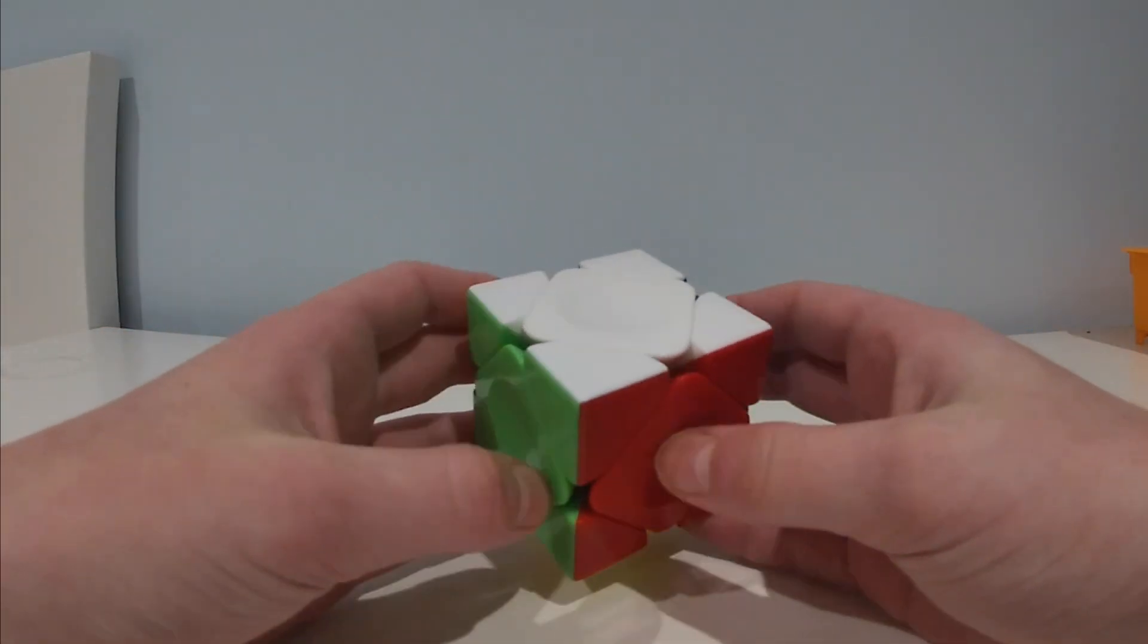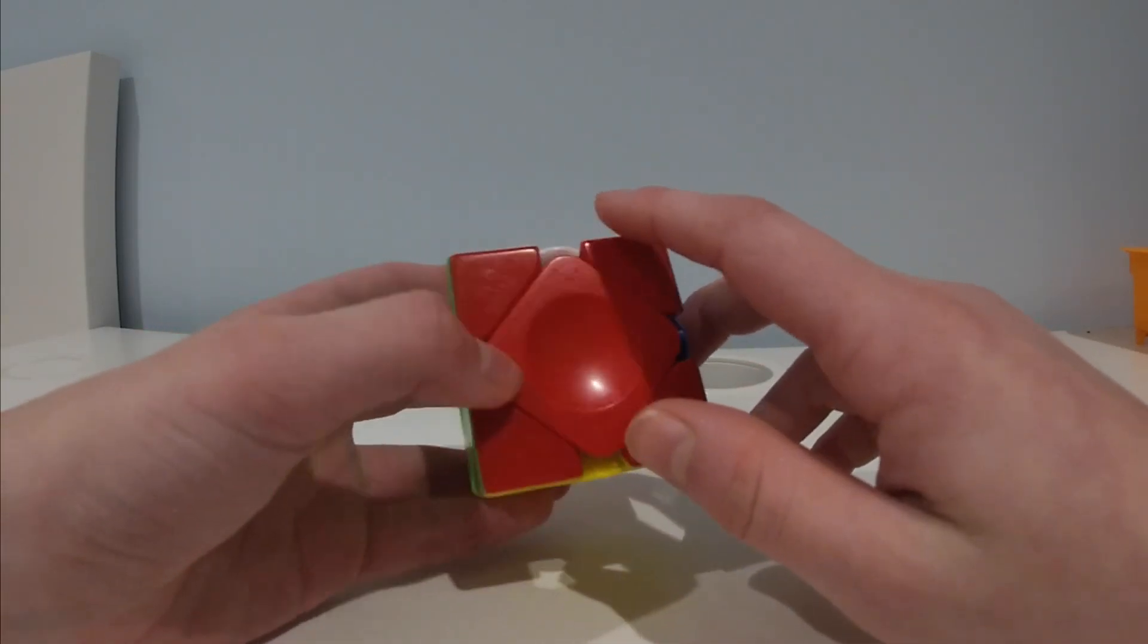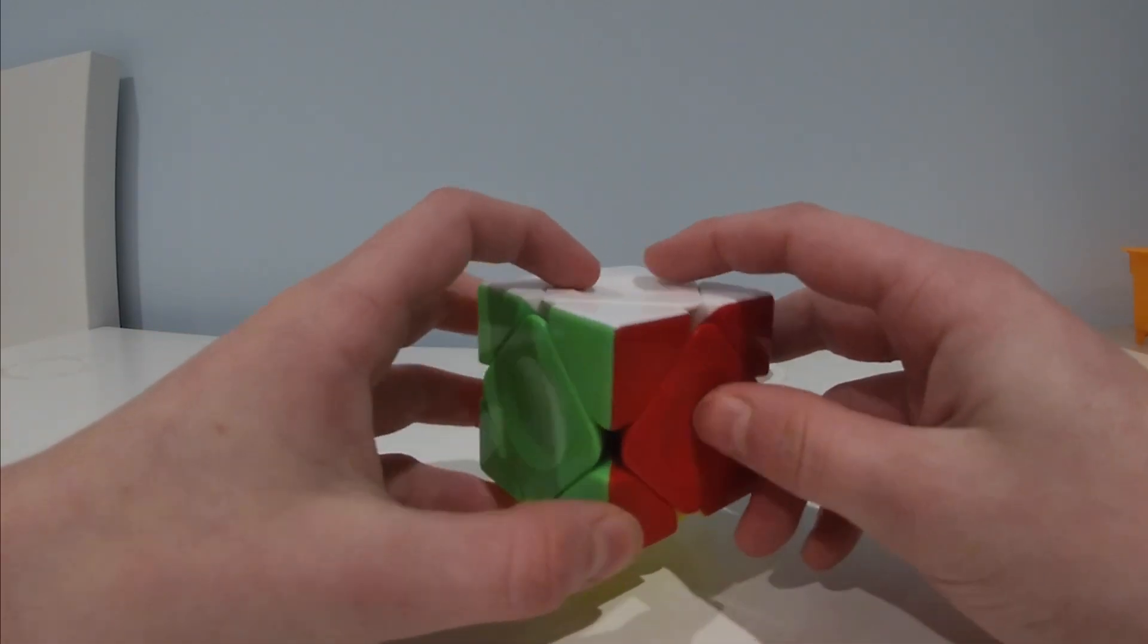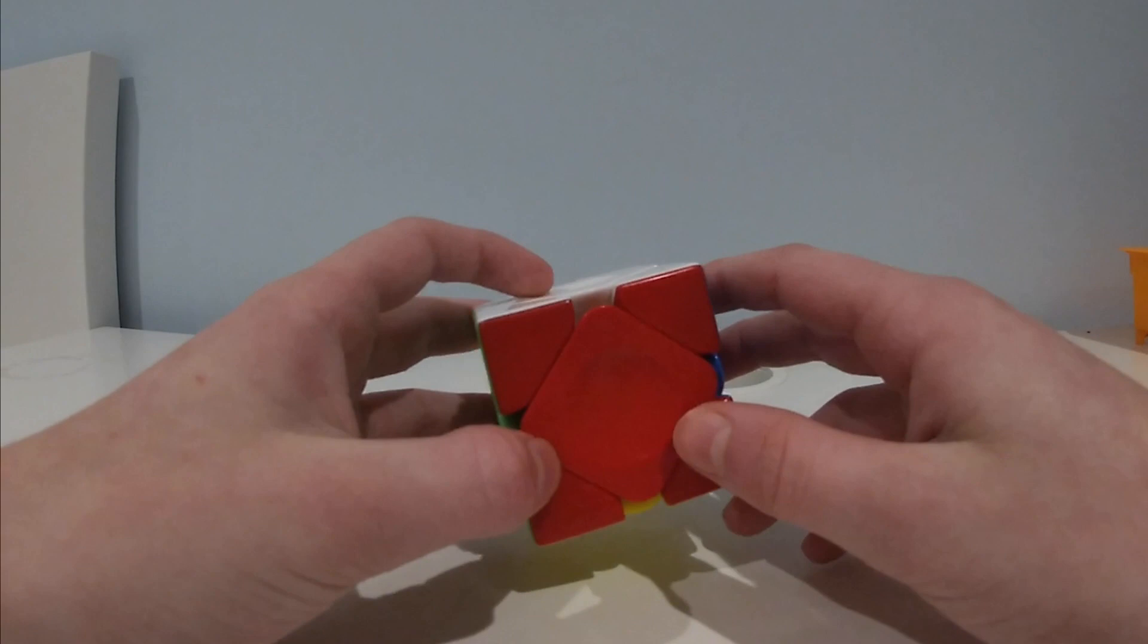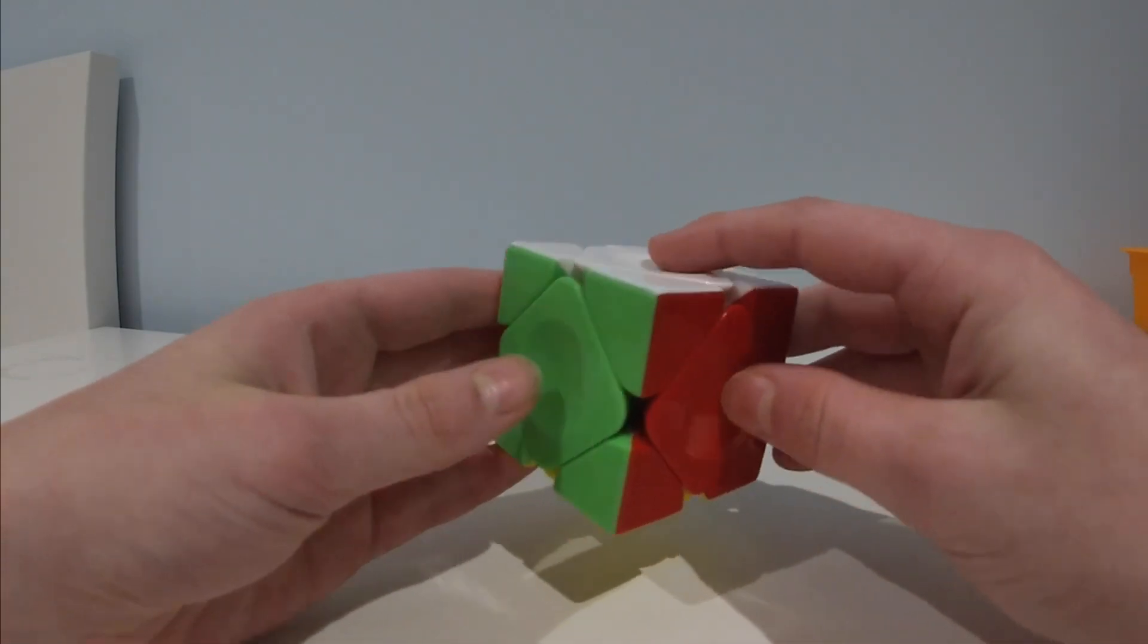Before I show you how to solve the Skewb, you're going to have to learn some notation. Unlike the 3x3 however, you only need to know two moves and of course the inverses.